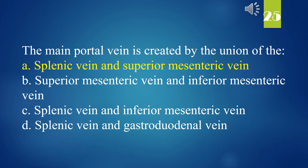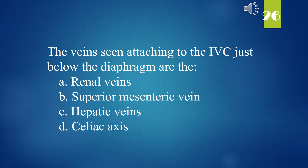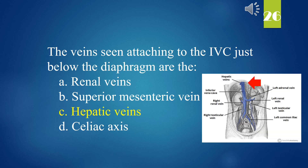The veins seen attaching to the IVC just below the diaphragm are: A. Renal veins. B. Superior mesenteric vein. C. Hepatic veins. D. Celiac axis. The answer is C. Hepatic veins.